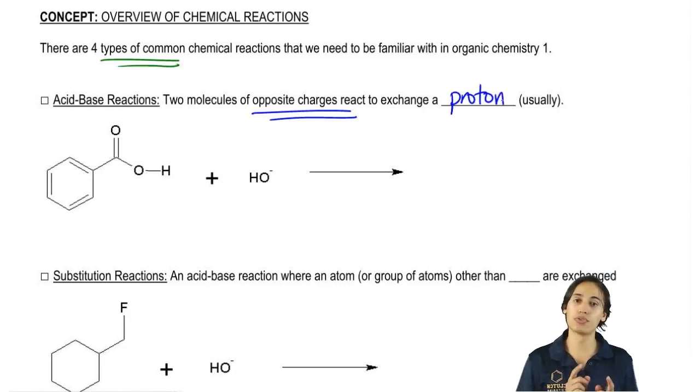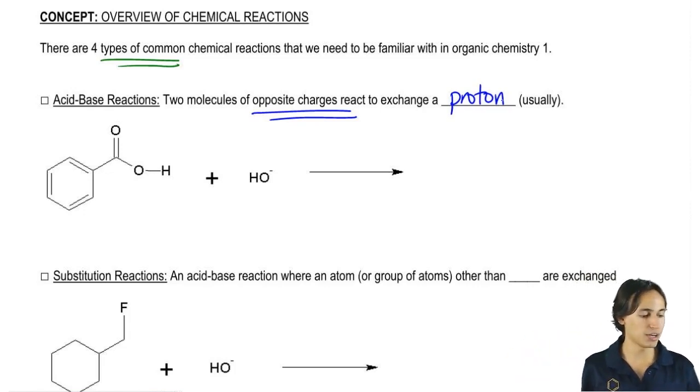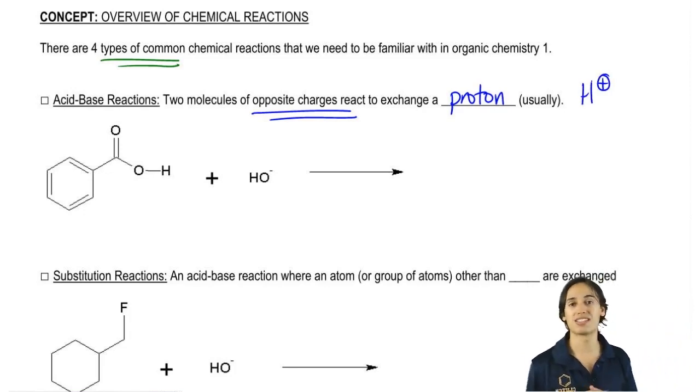Now, I used the word proton earlier in the first chapter when I was explaining just electrons and protons and what I said a proton was is just an H+. Because remember that it's a hydrogen that doesn't have an electron and it doesn't have a neutron, so it's just a proton and that's why we call it a proton.